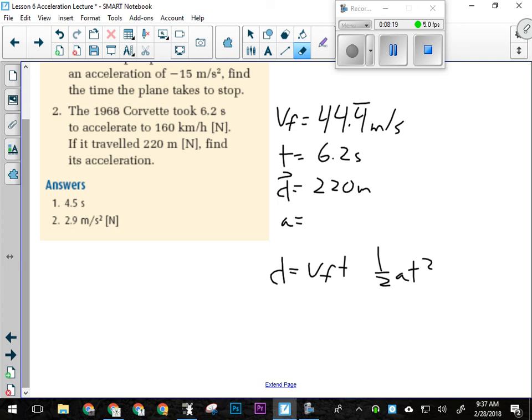Now I'm going to subtract VFT over to this side because, according to this, VFT is positive. This is negative over here, but this part's still positive. So I'm going to go D minus VF times T.